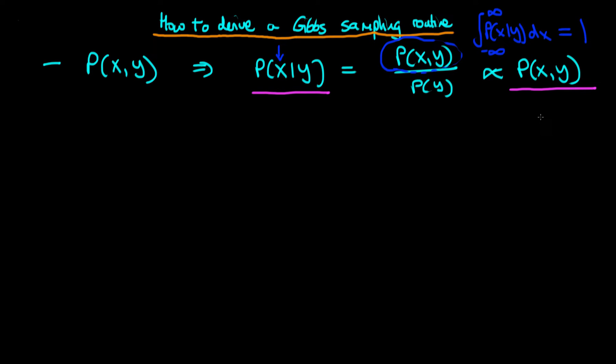If we recognize the functional form of the dependence on x as being the same as that from a known distribution, then we know — because the right hand side must be a valid probability distribution — it actually must be that known distribution. To derive a Gibbs sampler, we first find p of x given y by taking the joint distribution, removing all terms which don't involve x, and then checking if we recognize that functional dependence.